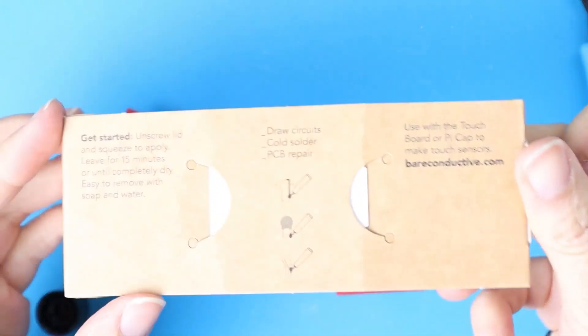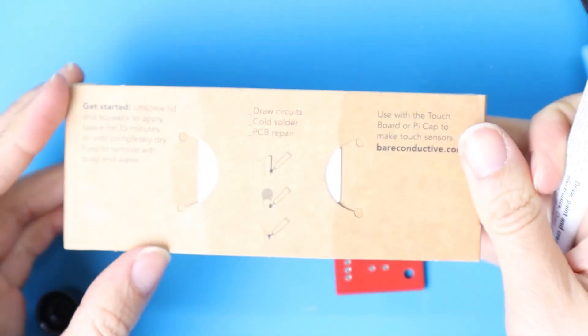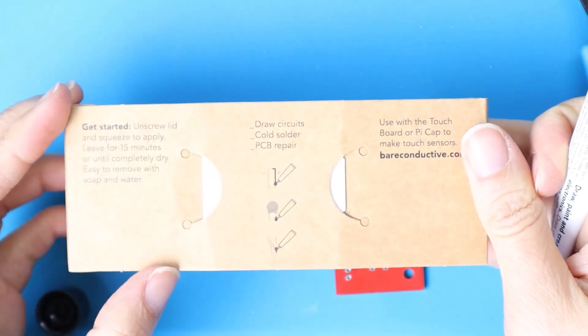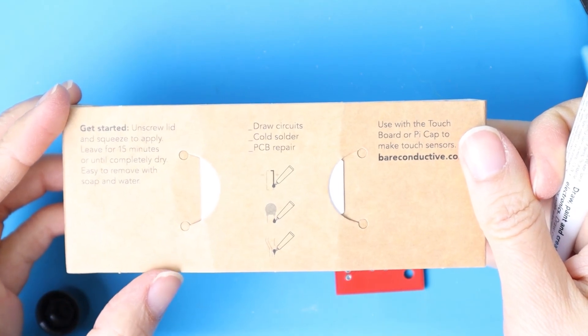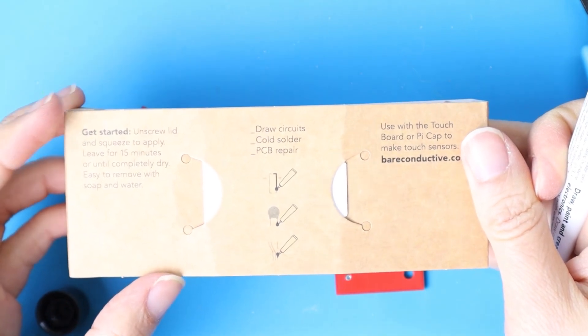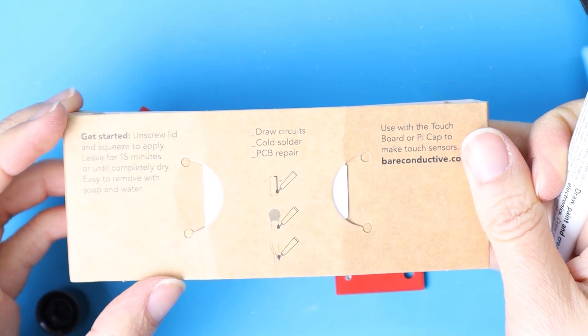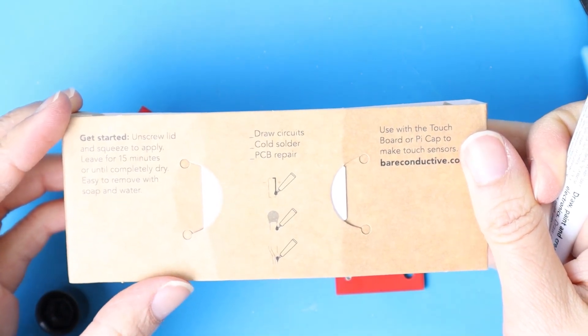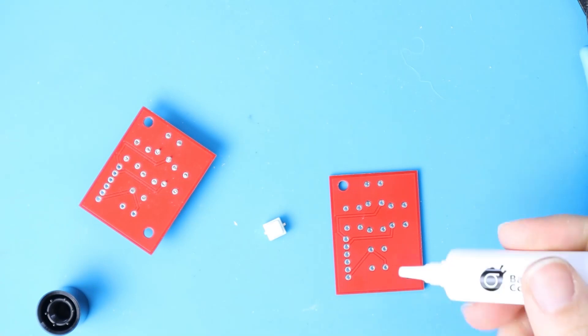In these instructions they say you can draw circles, do cold solder and PCB repair. Open the lid, apply, and wait for 15 minutes. I'll try if we can solder this.